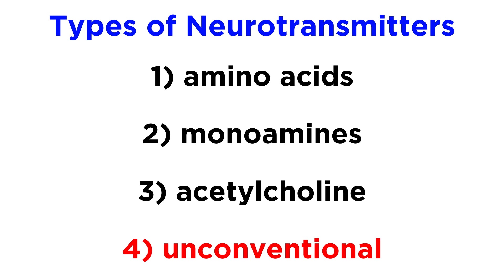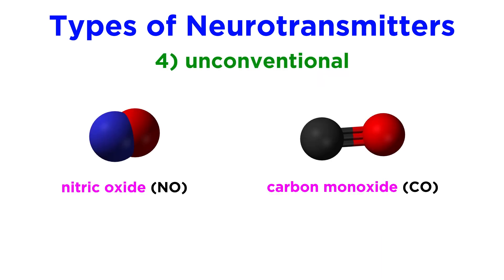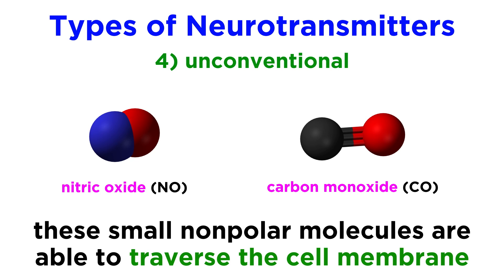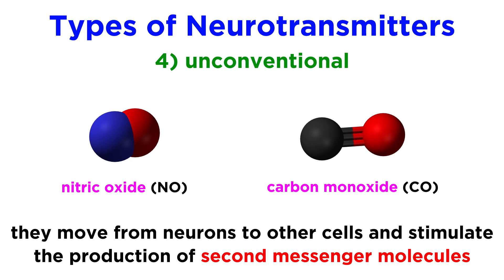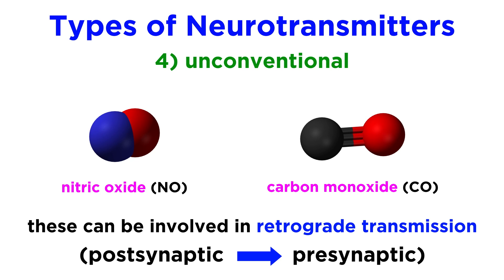Apart from these classes of small molecules, there is another class of unconventional neurotransmitters that don't fit into the other categories. This includes small molecules like nitric oxide and carbon monoxide. These are of a different class because, being extremely small and nonpolar, they are able to pass through the cell membrane and thus freely diffuse in and out of cells without needing to pass through membrane proteins. Once produced inside a neuron, they move into other cells, where they stimulate the production of second messenger molecules, after which they are quickly converted into something else — so they are short-lived. Sometimes these molecules are involved in retrograde transmission, where they travel from the postsynaptic neuron back to the presynaptic, opposite the direction of travel for other neurotransmitters.